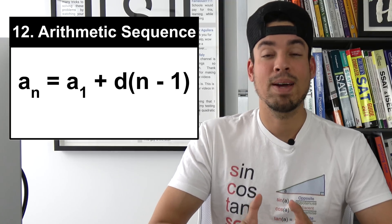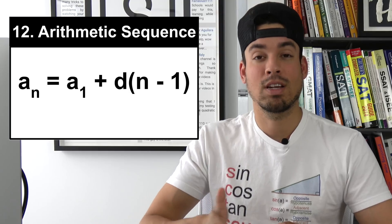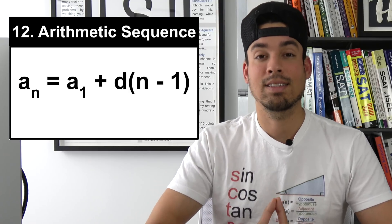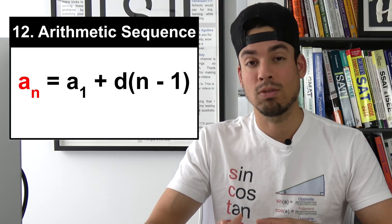Next we have the formula for an arithmetic sequence. An arithmetic sequence is a sequence of numbers that either jumps up or goes down by the same amount each time like 2, 4, 6, 8, 10 etc. Now in this sequence a sub n is a of the nth term.